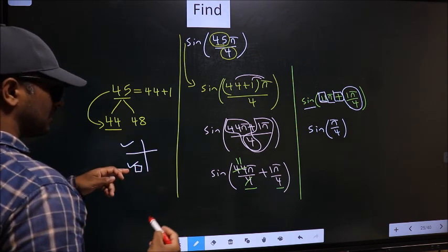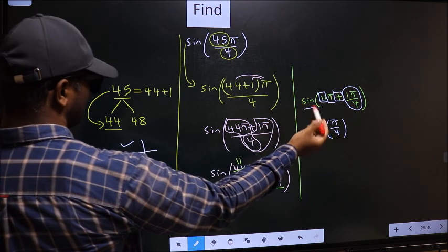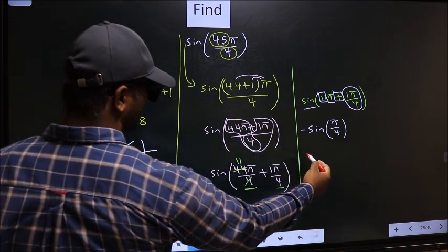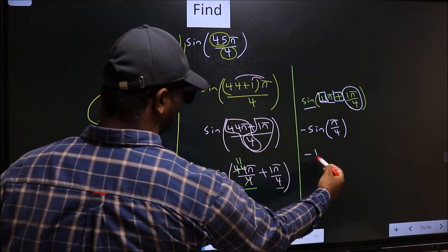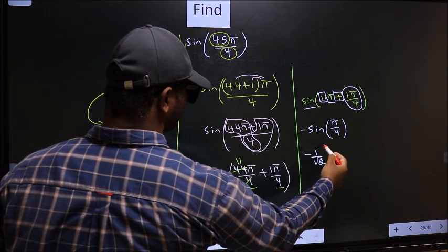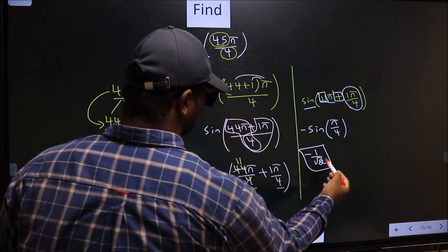And in the third quadrant, sin is negative. So, put negative. So, negative sin π/4 is 1 by root 2. So, this is our answer.